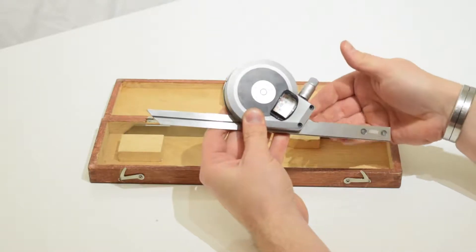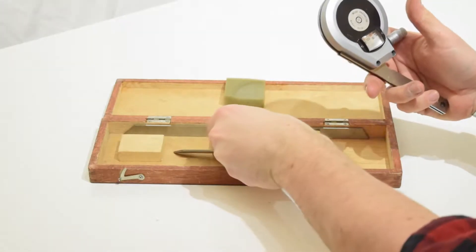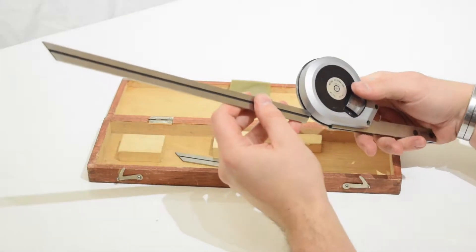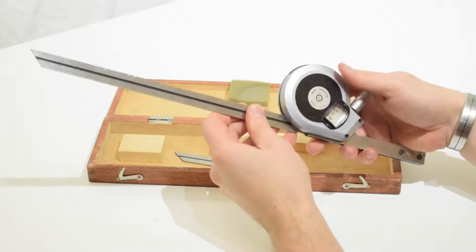There's no backlash in the worm that drives the thimble in the dial. Very stable measurements. And it's mainly made of hardened stainless steel.